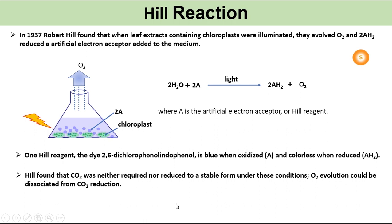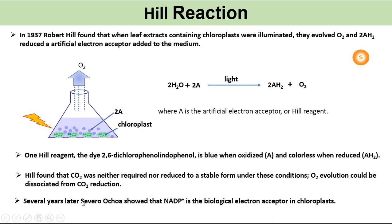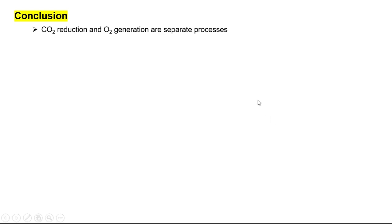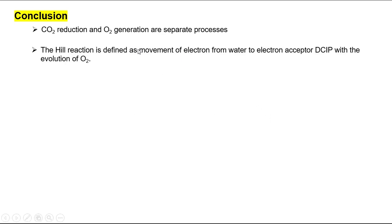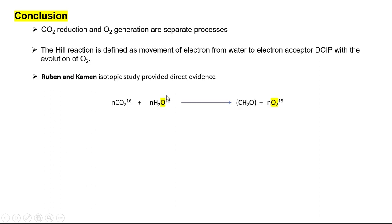Several years later, Severo Ochoa showed that NADP is the biological electron acceptor in chloroplasts. Hill concluded that CO2 reduction and O2 generation are separate processes. The Hill reaction is defined as the movement of electrons from water to the electron acceptor DCIP, with the evolution of oxygen. Rubin and Cayman's isotopic study provided direct evidence that O2 is released from water.